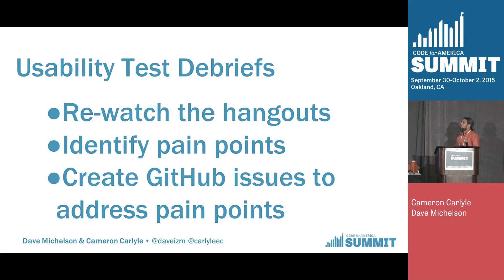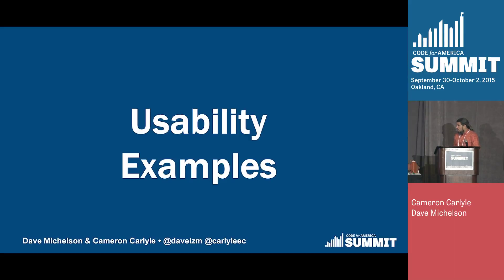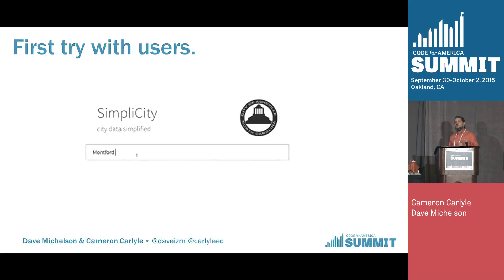After each usability test — usually three or four people per group — we'd re-watch the Google Hangout recordings, identify pain points, discuss where users struggled, and log issues on GitHub. Then we'd fix what we found and come back a second time with similar questions to see what improved. In our first try, the interface was very simple. When we asked people what they thought the site did, they'd say 'I'm not sure — something about city data being simple,' with nothing to indicate what to search.